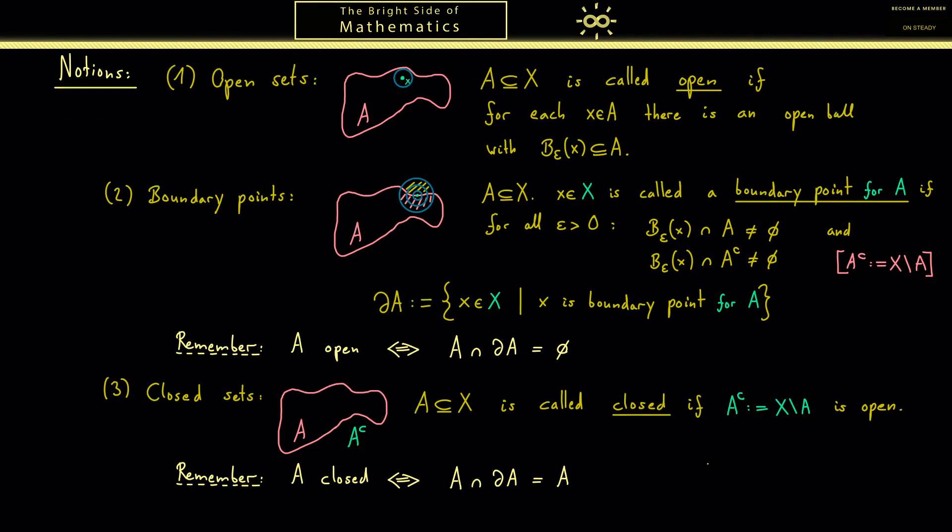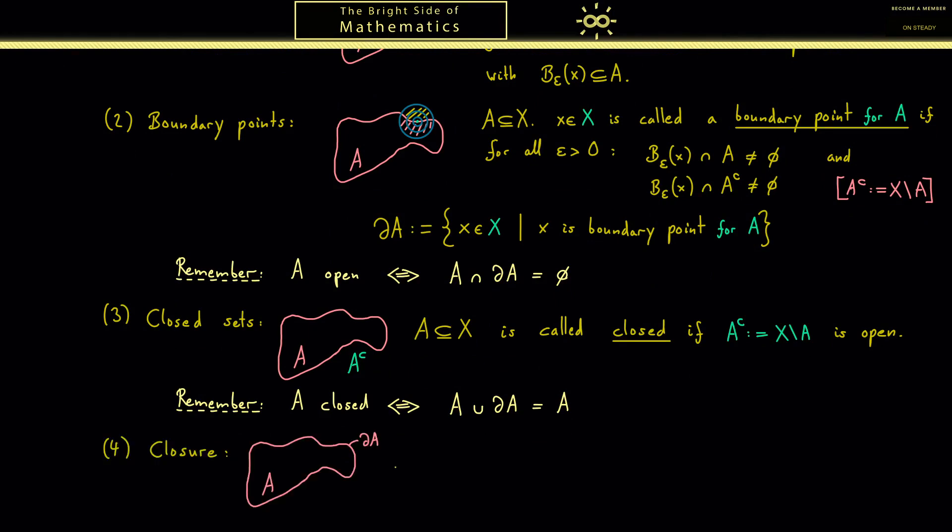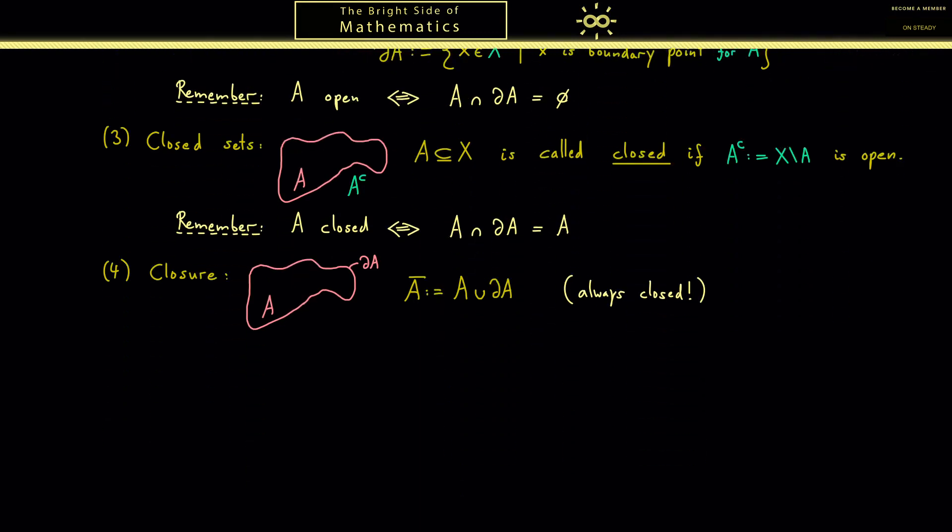Now the last notion for today will be the so-called closure. The name already tells you if you start with an arbitrary subset A what you want to get out is a closed subset. How to get this you might already know. You just add all the missing boundary points, so you form the union with the boundary. And this is what we call the closure of A, and we denote that with a bar over A. Now please remember this always defines a closed set. Indeed, it's the smallest closed set that still contains A.